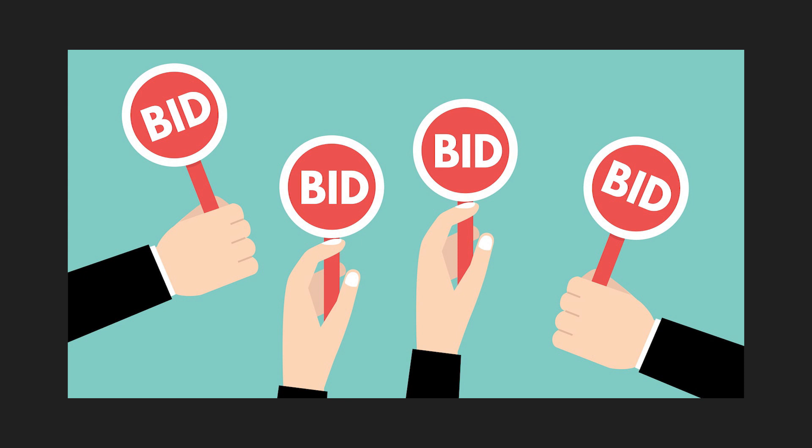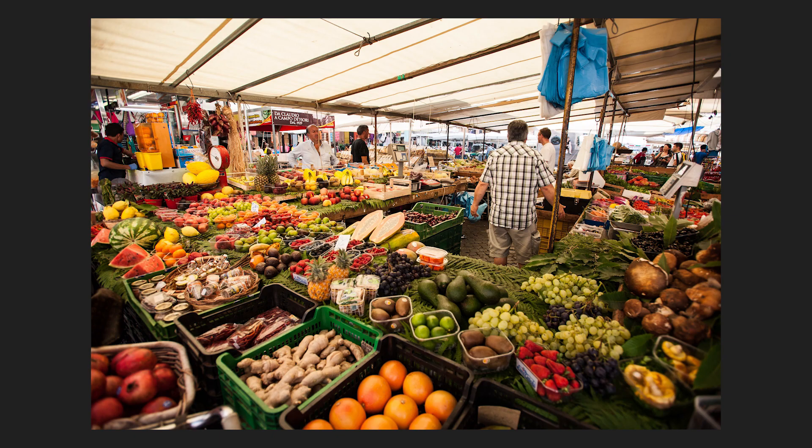The second term is bid or ask price. The bid is the highest price at which a buyer would buy the stock, and the ask price is the lowest price at which a seller would sell his stock. A buyer or seller can set the prices at which he wants to buy or sell, and this price is called the bid or ask price.